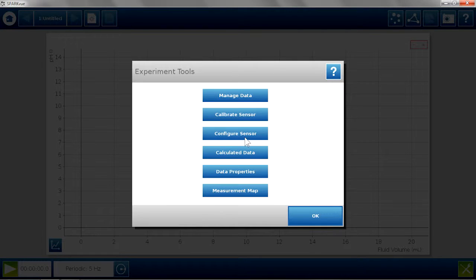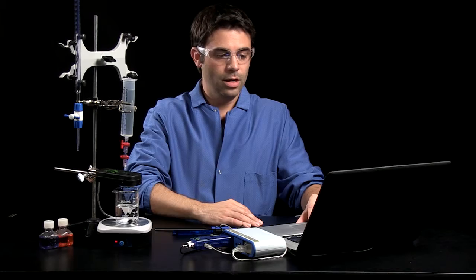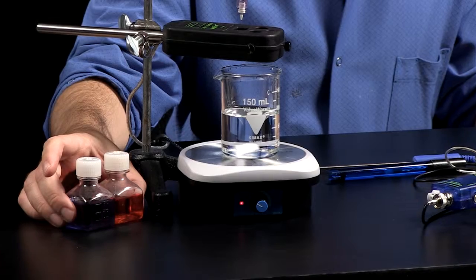You can calibrate your sensor. In this case, I can calibrate my chemistry sensor and my pH. Now I already pre-calibrated this with my buffers 4 and 10.